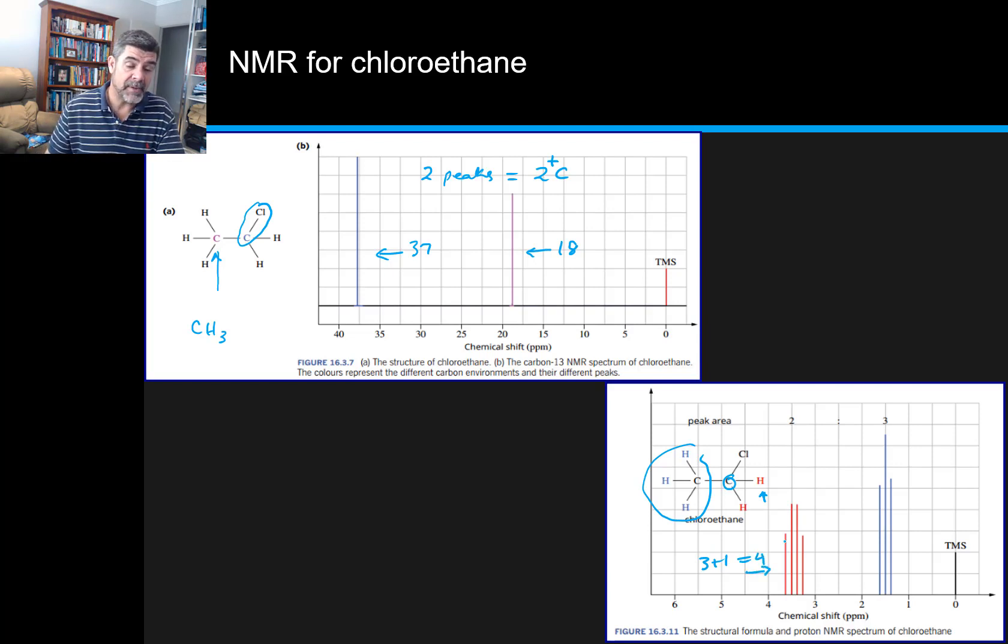And of course the other carbon has a neighbour which has two hydrogens and a chlorine, and the chlorine is not going to be part of this, but the hydrogens will. So therefore if we count the number of hydrogens over here, we have two plus one, which gives us three of these little cluster peaks all together. So that's how we can put this information together.